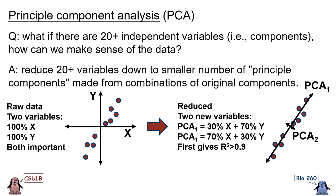Each principal component can be thought of as a combination of relative contributions from the original variables. For more complicated systems with n variables, we are actually looking at data in an n-dimensional hyperspace. We identify the direction of highest variance and define that as principal component 1, then identify the orthogonal axis of highest remaining variance and define that as principal component 2, then the orthogonal axis of next highest remaining variance as principal component 3, and so on. The number of principal components will end up being the same as the number of original variables.